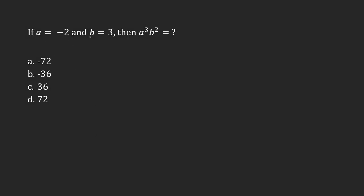If a is equals to negative 2 and b is equals to 3, then a to the power of 3 times b to the power of 2 equals to how much?